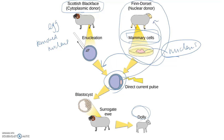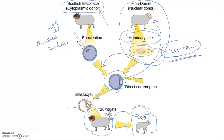The nucleus from the donor cell was placed into the enucleated egg. This was grown in the lab to the blastocyst stage — multiple cells — and then implanted into a third sheep serving as the surrogate, whose uterus was used to carry the embryo. Dolly was born, and genetic testing verified that her DNA matched the nucleus donor, confirming she was a clone of that particular sheep.